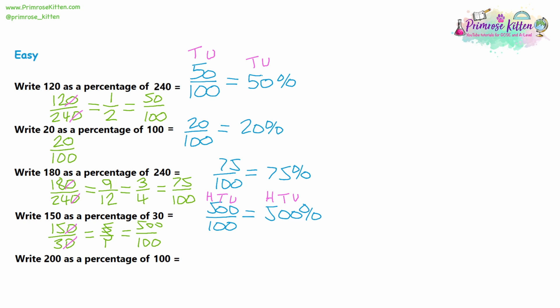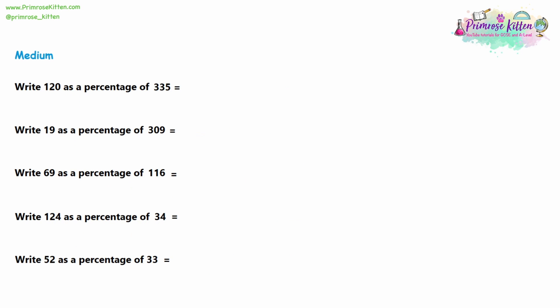Question 5 — 200 as a percentage of 100. That would be 200 over 100. We already have it out of 100, so 200 over 100 is 200%. As long as the denominator is 100, the numerator is your percentage. Now with the easy questions, that was the non-calculator method, but with the medium questions we have much more complicated numbers, so we're going to use a calculator method now.